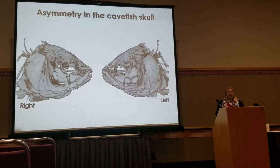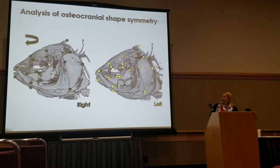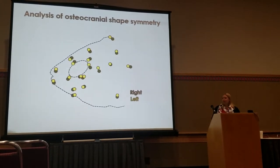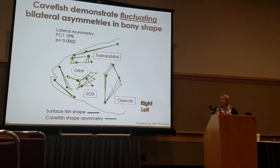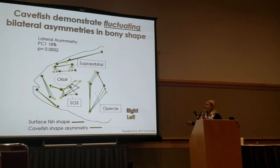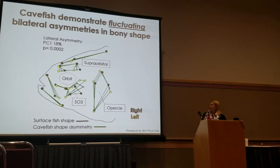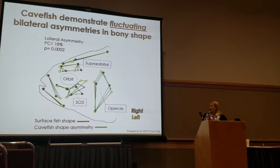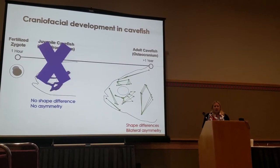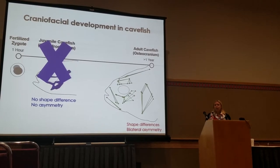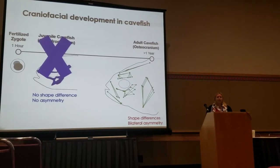We then looked at bilateral symmetry in adults by setting landmarks, reflecting one side onto the other, and comparing right and left shapes. The data showed a lot of bilateral asymmetry in the cave fish skull — particularly in the SO3 bone that fragments, the supraorbital bone above the eye, and the opercular bone posterior to the eye and the lateral expansion. We found that early in the life history of the cave fish the skull is relatively preserved, and it's not until later in ossification of the osteocranium that we start to see these big differences.